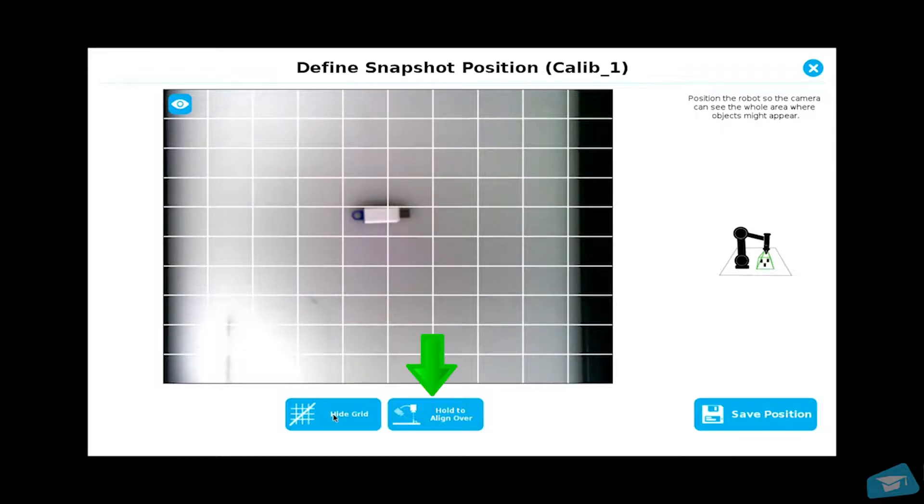If required, tap the hold to align over button to realign the camera with the work plane. Save the calibration position.